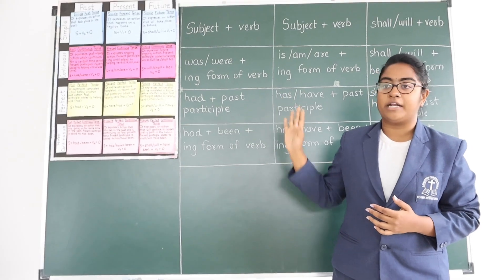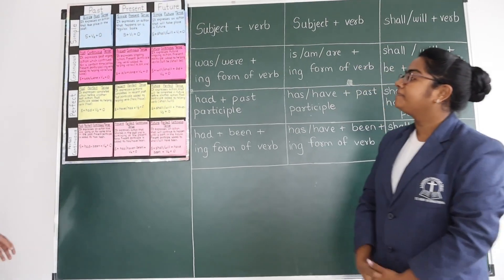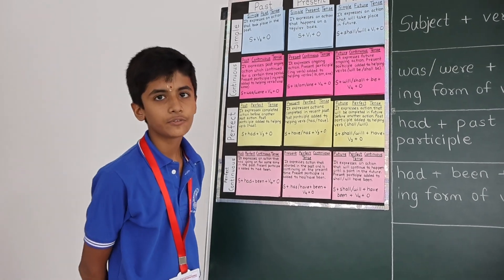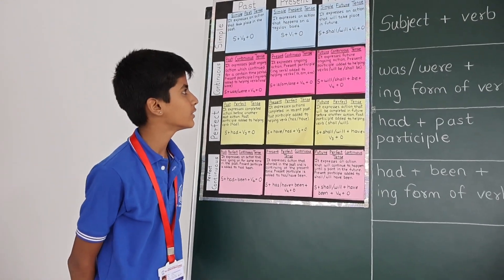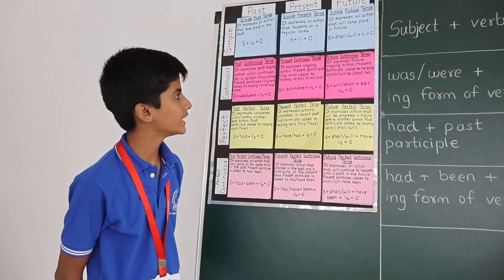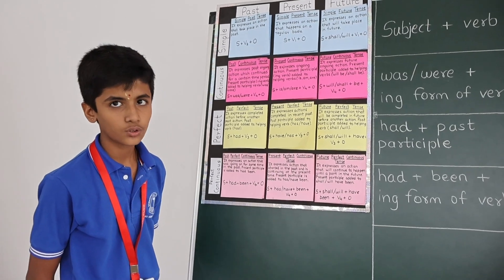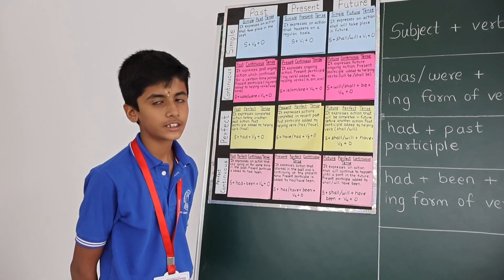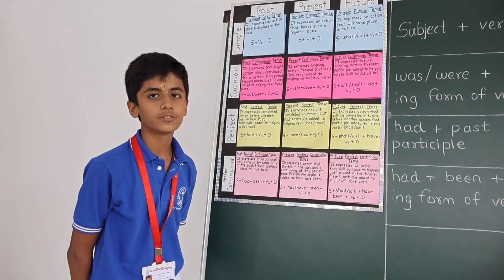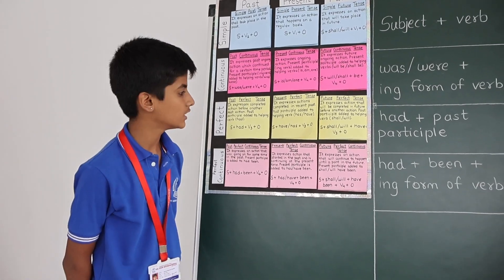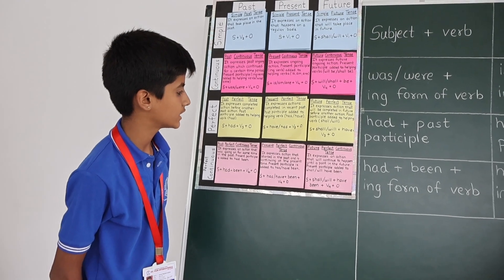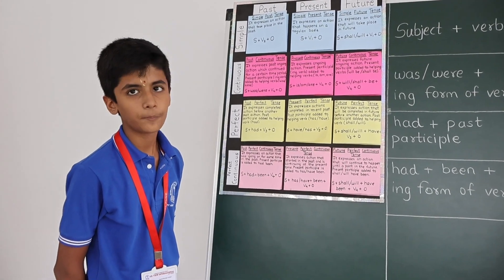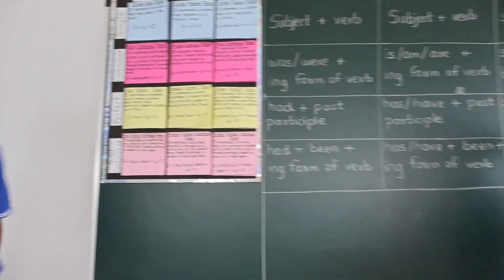I would like to call Sarrouk to come ahead and explain regarding the future tense. Simple future tense expresses an action that will take place in the future. Future continuous tense expresses future ongoing actions. Future perfect tense expresses an action that will be completed in the future before another action. Future perfect continuous tense expresses an action that will continue to happen.